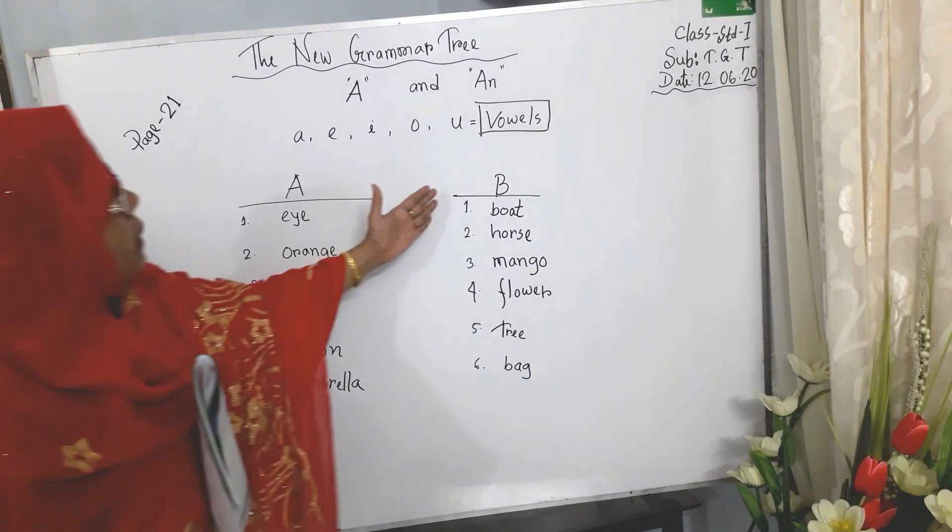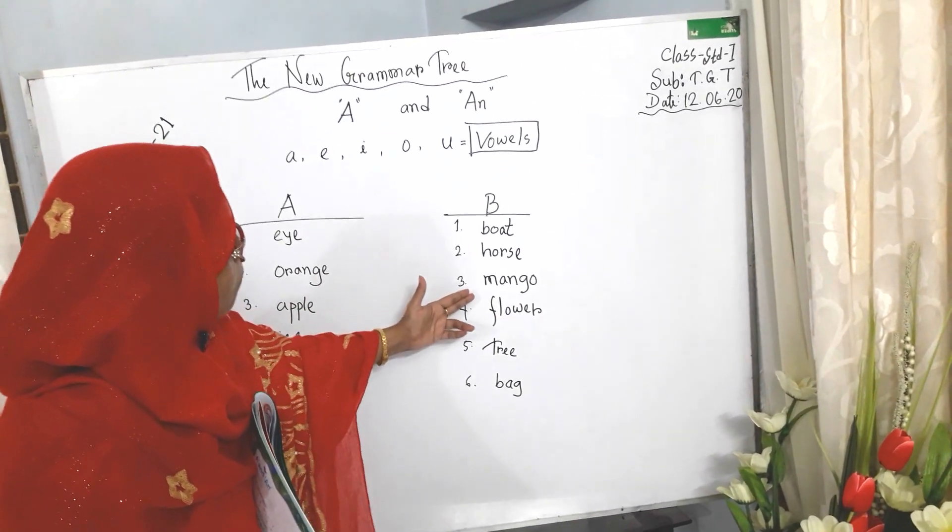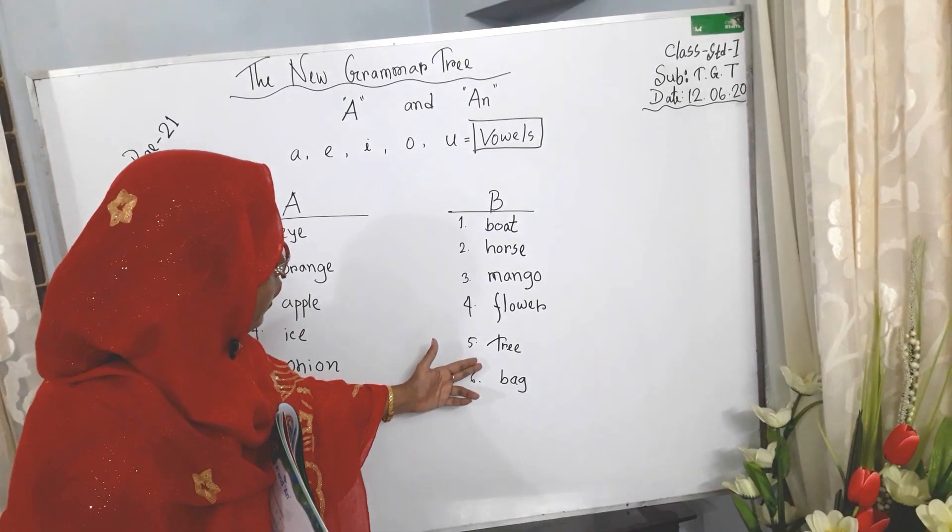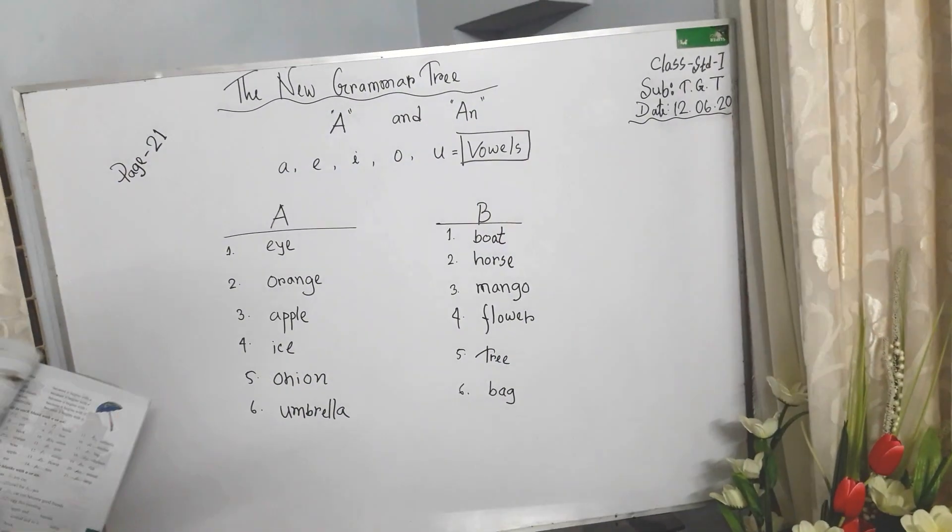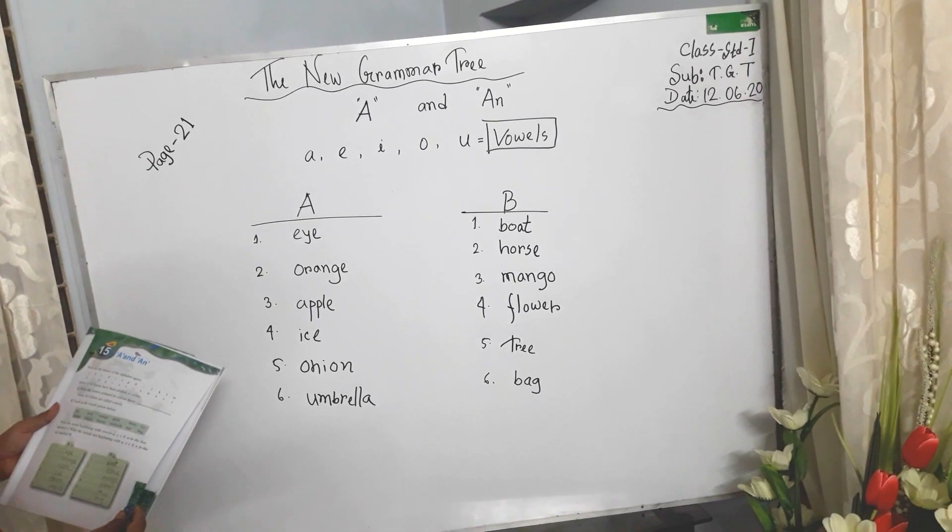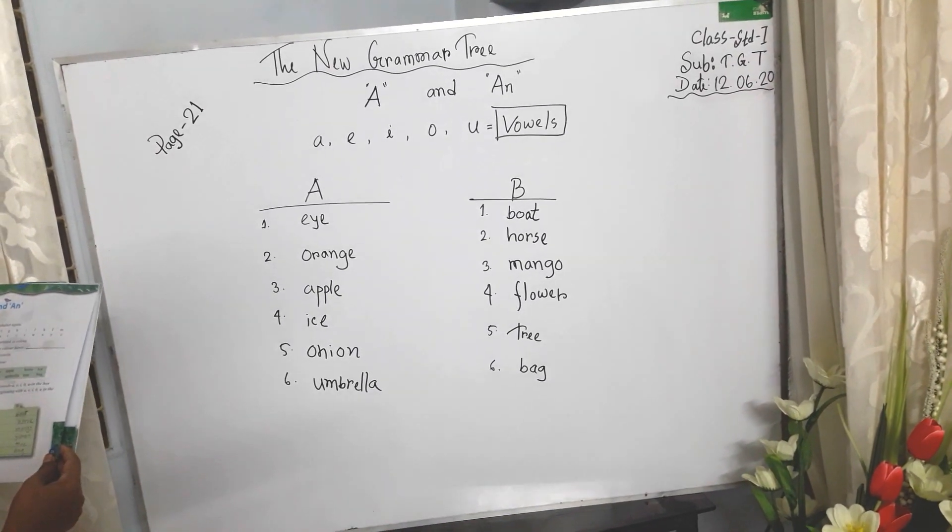And beside: bone, horse, mango, flower, tree, bag. They are not beginning with A, E, I, O, U.